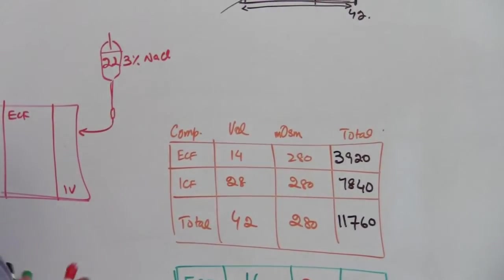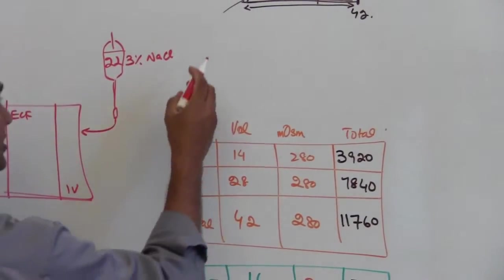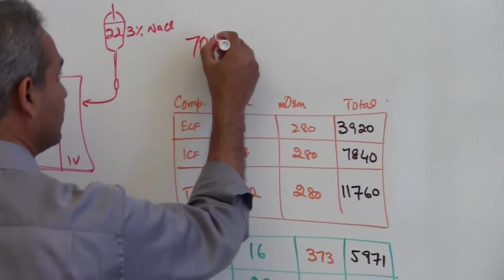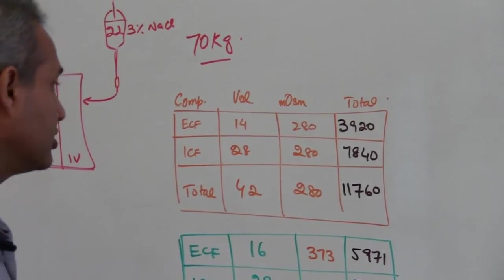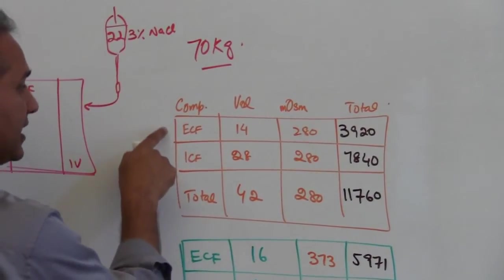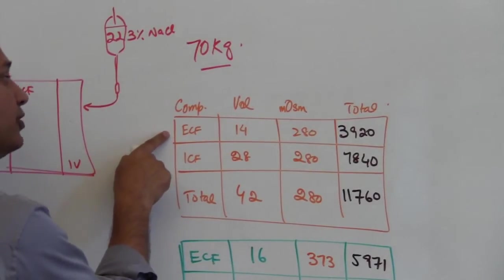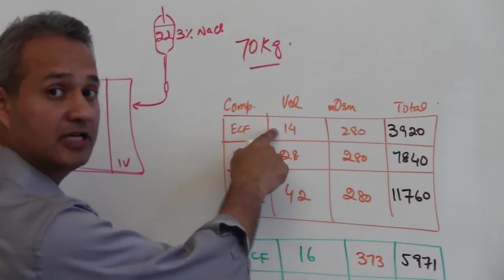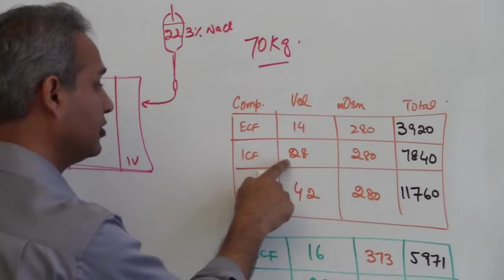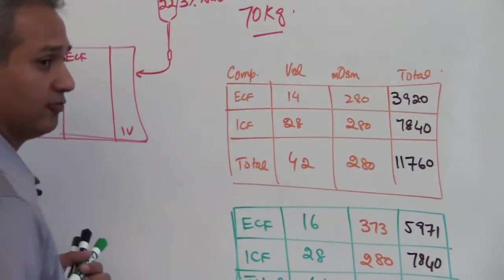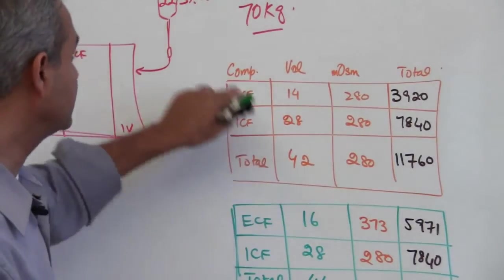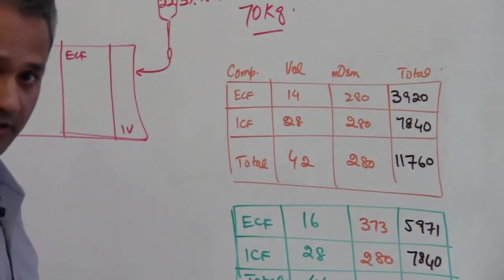This is a normal healthy 70 kilogram person we have been using his example or her example throughout our studies here. Extracellular fluid volume about 14 liters, intracellular fluid volume about 28 liters, total fluid volume 42, that is the 60 percent of the 70 kilogram, right.